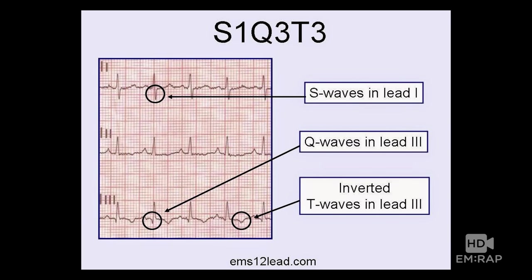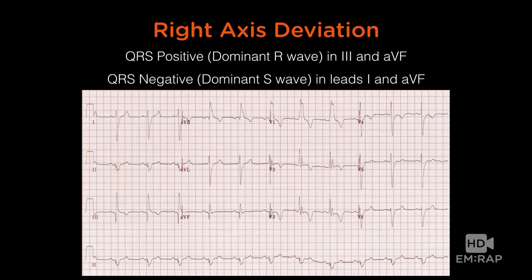S1Q3T3 is just part of the right axis shift that happens. When you see an S wave emerging in lead 1, it means the axis is shifting rightward — down in lead 1 and up in aVF means a rightward axis. That's really what S1Q3T3 is. Right axis deviation is a sign of right heart strain. The S1Q3T3 is visible on the EKG, and the voltage is predominantly downward in lead 1 and predominantly up in aVF — a rightward axis shift, another feature of right heart strain.